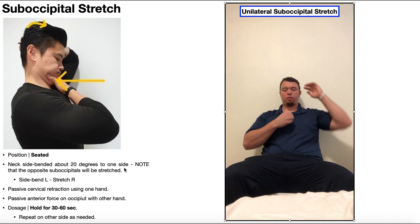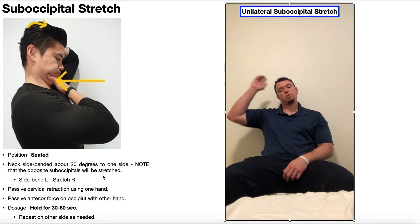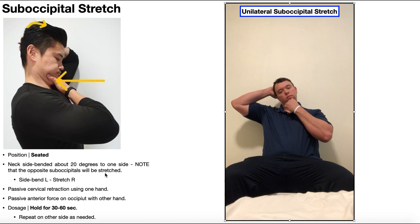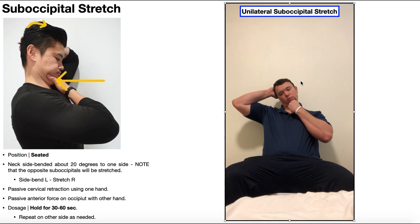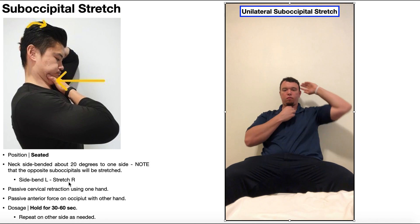An important note, though, is that the opposite side suboccipitals are going to be stretched. So for example, right now I'm side bended to the right, but it's the left suboccipitals that are actually going to be stretched. Over here, I'm side bended to the left, which means it's my right suboccipitals that are going to be stretched. So whatever side you're bended toward, it's the opposite suboccipitals.